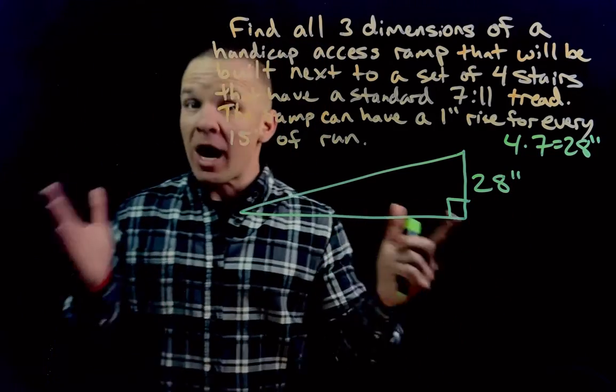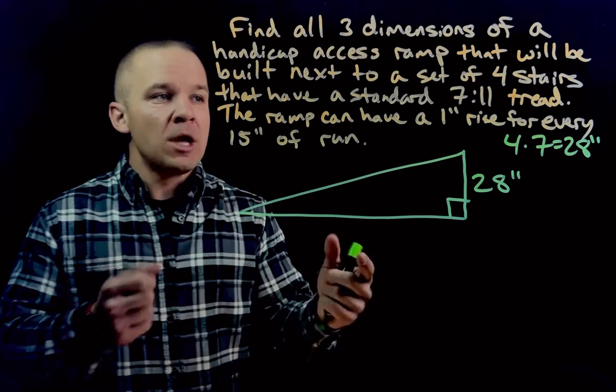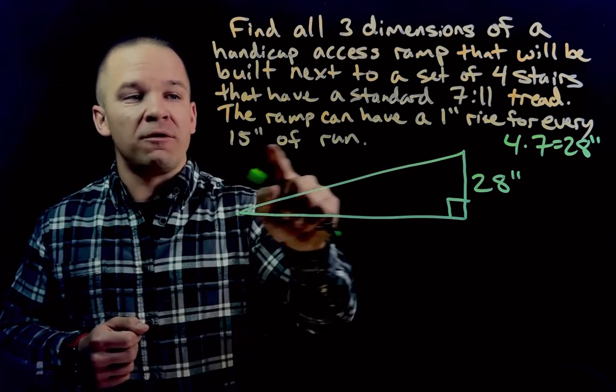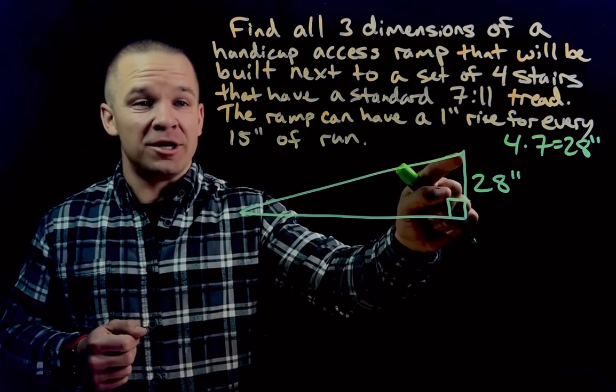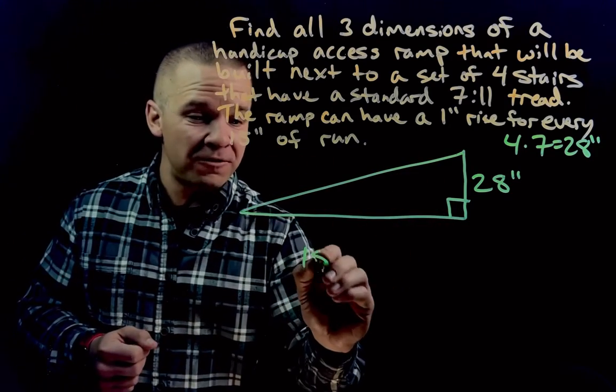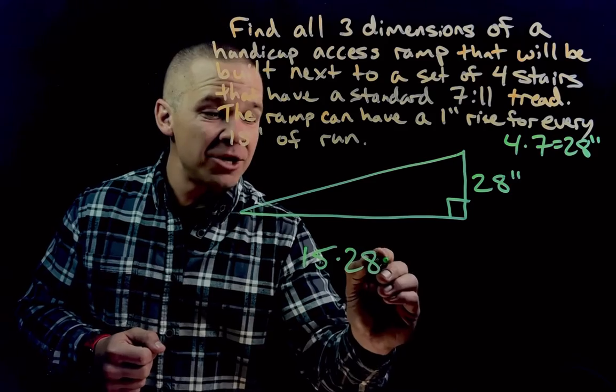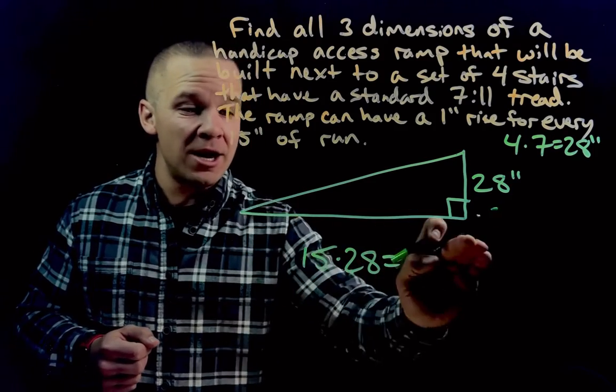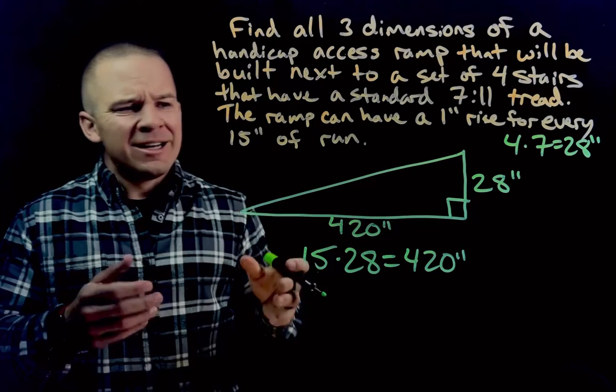All right. So we got one dimension. Can we get another? Well, it says one inch rise for every 15 inches of run. If I'm going up 28 inches, I'm going to need 15 times 28. So 15 times 28 inches for this length. That's going to be 420 inches.